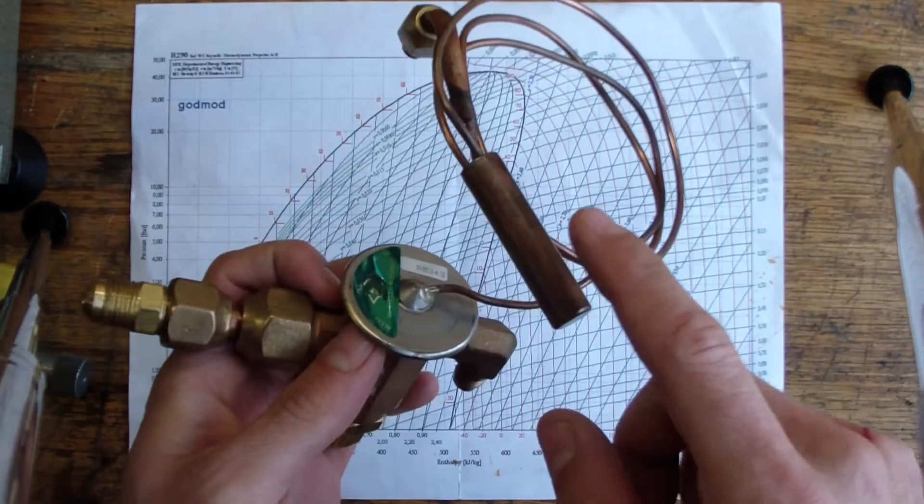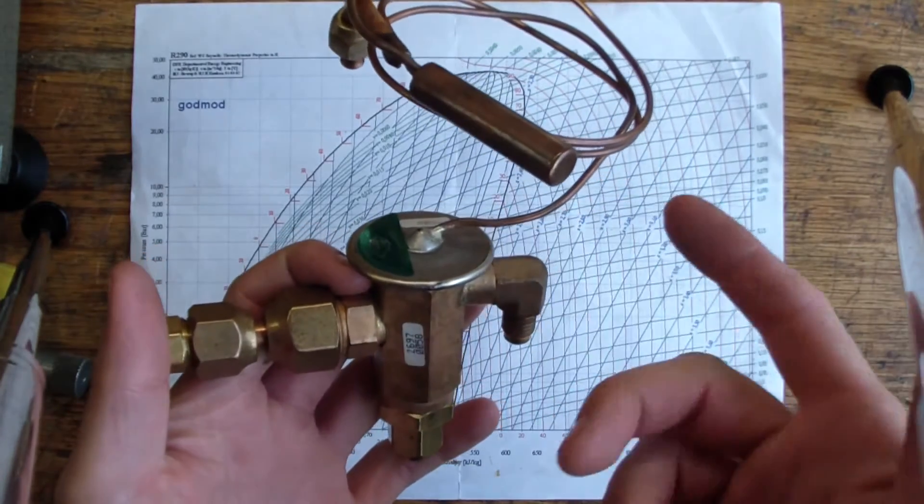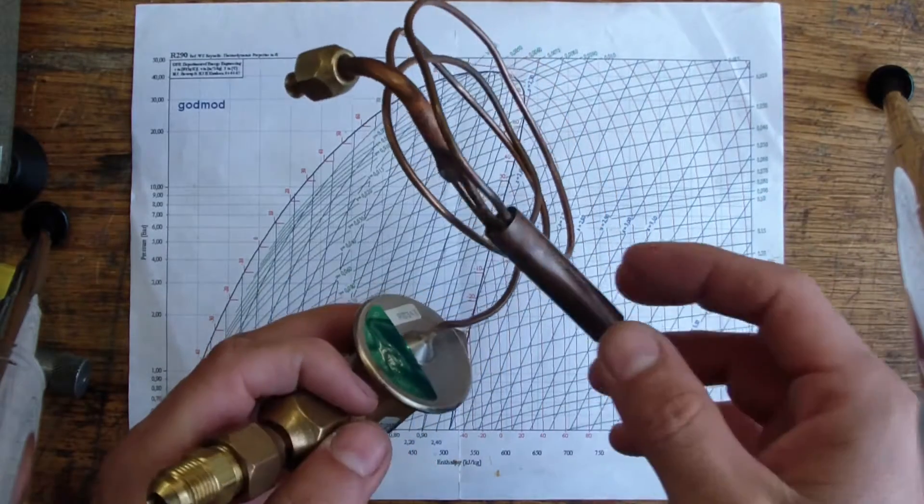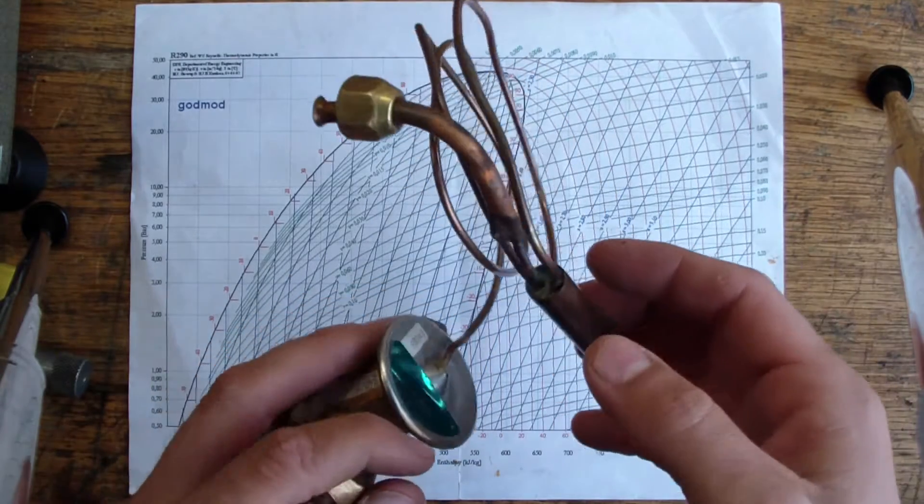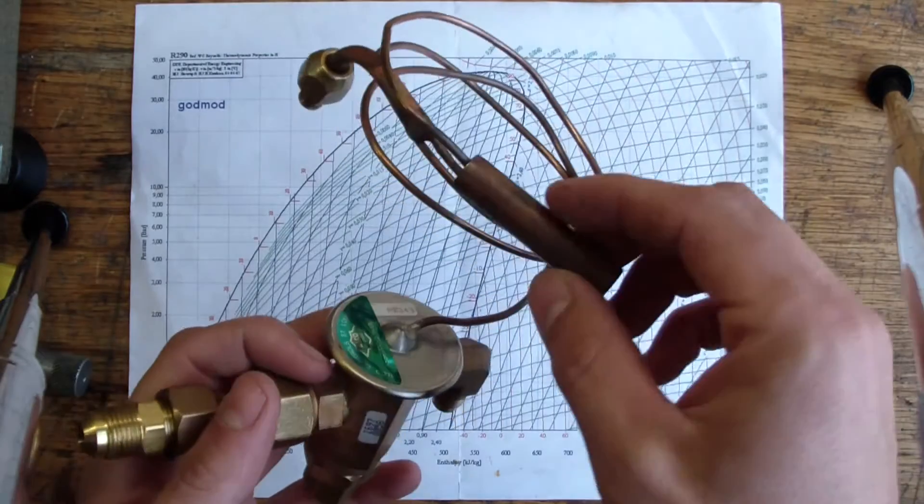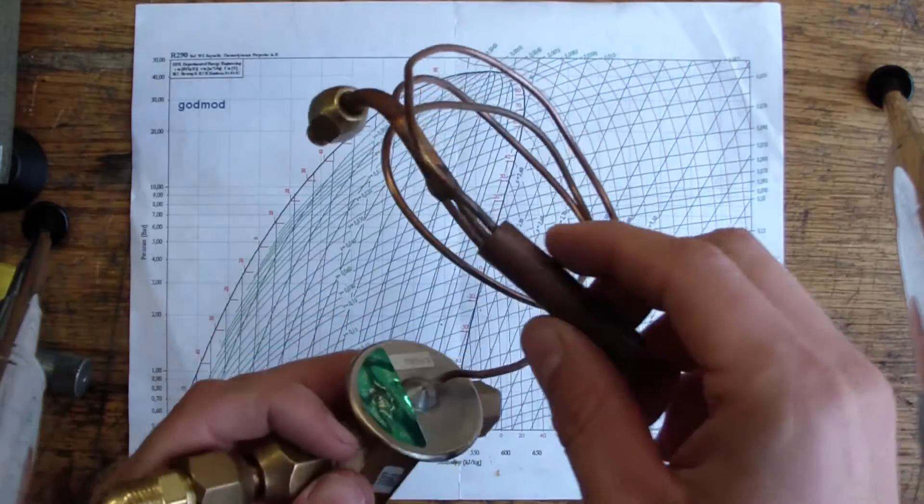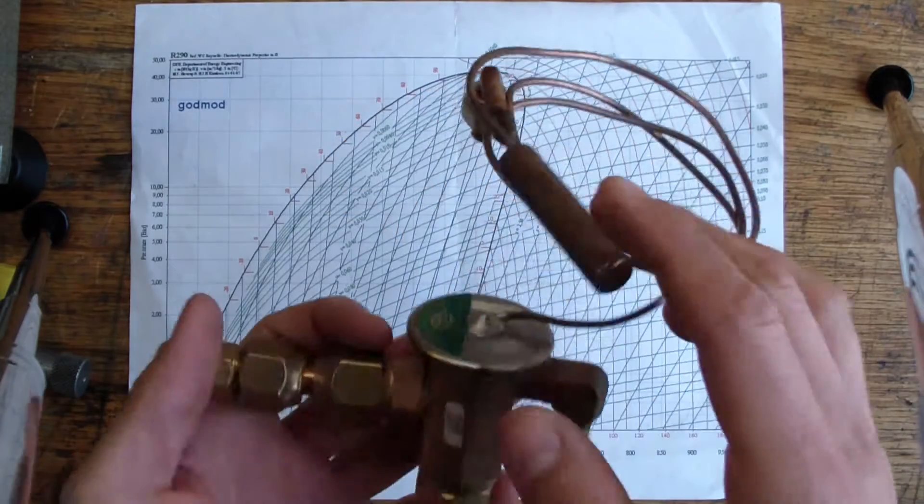You're going to have trouble trying to find one for R290 for propane if that's what you decide to work with. If you decide to work with 22 or R134A or 404 or 410, you should have any problem finding a TXV for that application. What I decided to do with this, I never used this as an actual TXV,